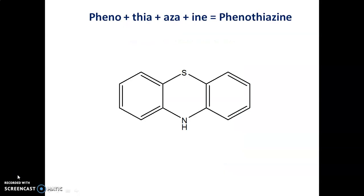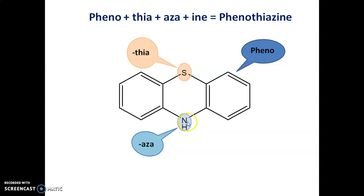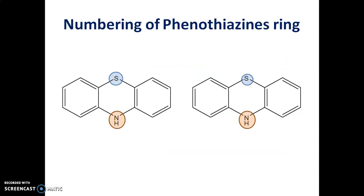What do you mean by phenothiazines? We can divide this word into three parts: pheno, thia, aza, and -ine. This phenothiazine nucleus consists of two phenyl rings — that is why the name is 'pheno.' 'Thia' is for the sulfur which is present in this heterocycle. 'Aza' is due to the presence of the NH group, and that is why the suffix is '-ine.' So the name is phenothiazine.